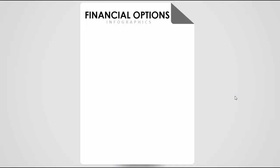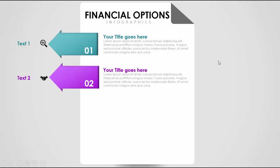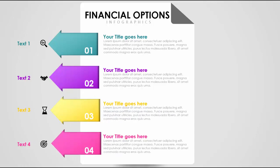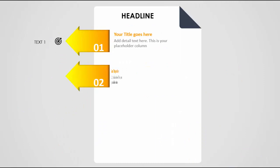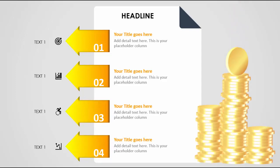In this tutorial I'm going to show you a four financial options infographic slide in PowerPoint. I've added a paper which is folded from the top right, and when I click it will reveal the first information — an arrow with an icon, text, and on the right side you can add your detail headline and text. It then goes to the second, third, and fourth options with different colors. I've also added a gold coin that appears on click. Let's see how to do this in PowerPoint.